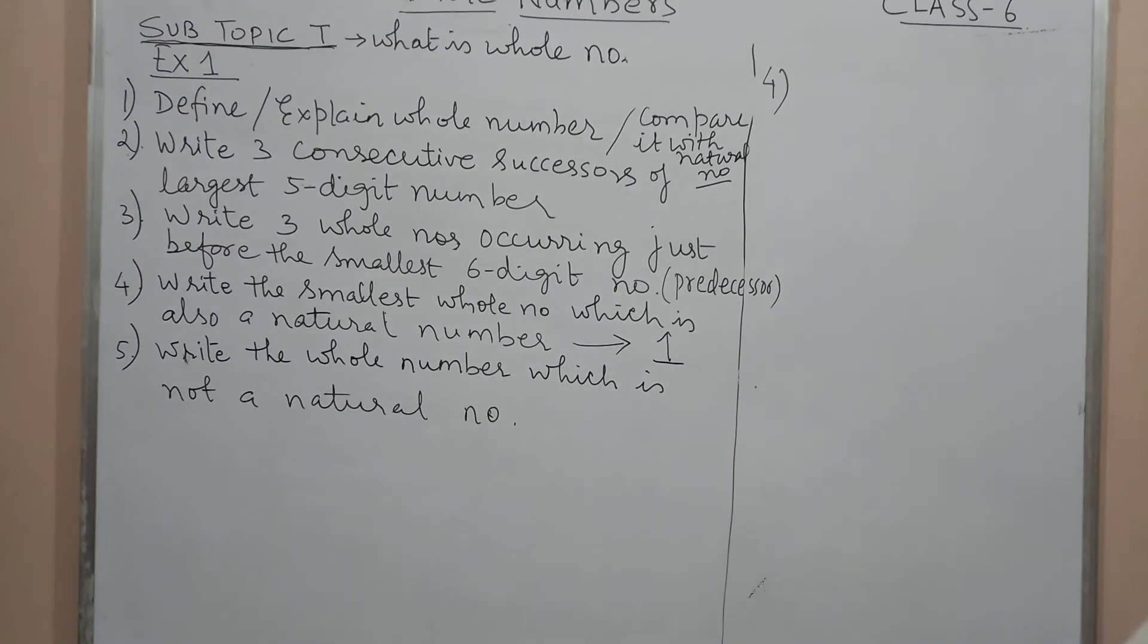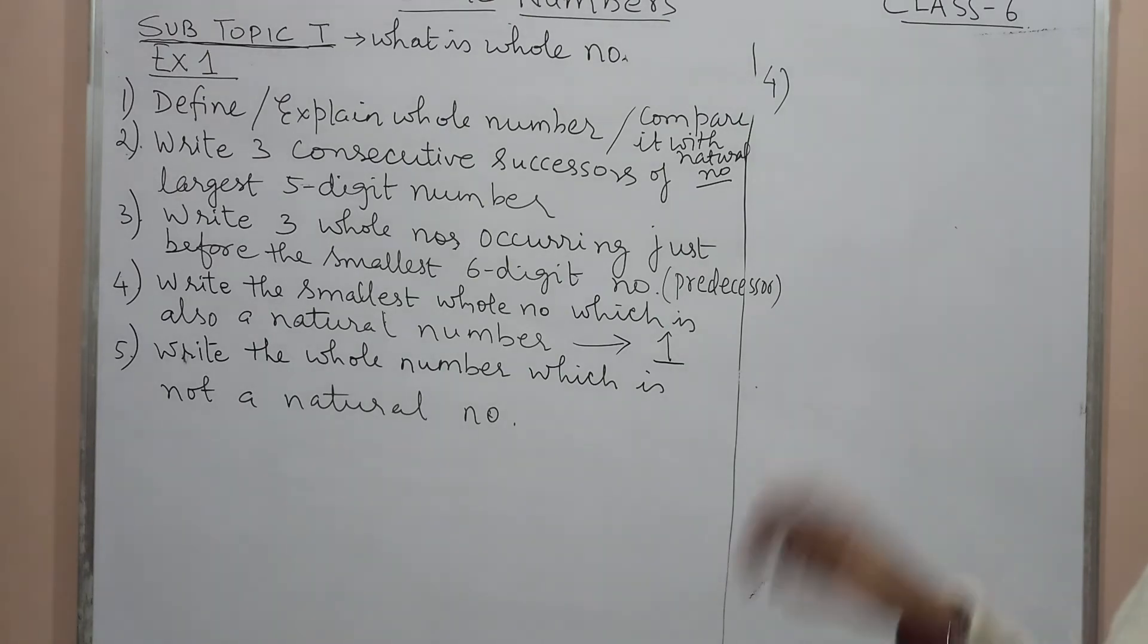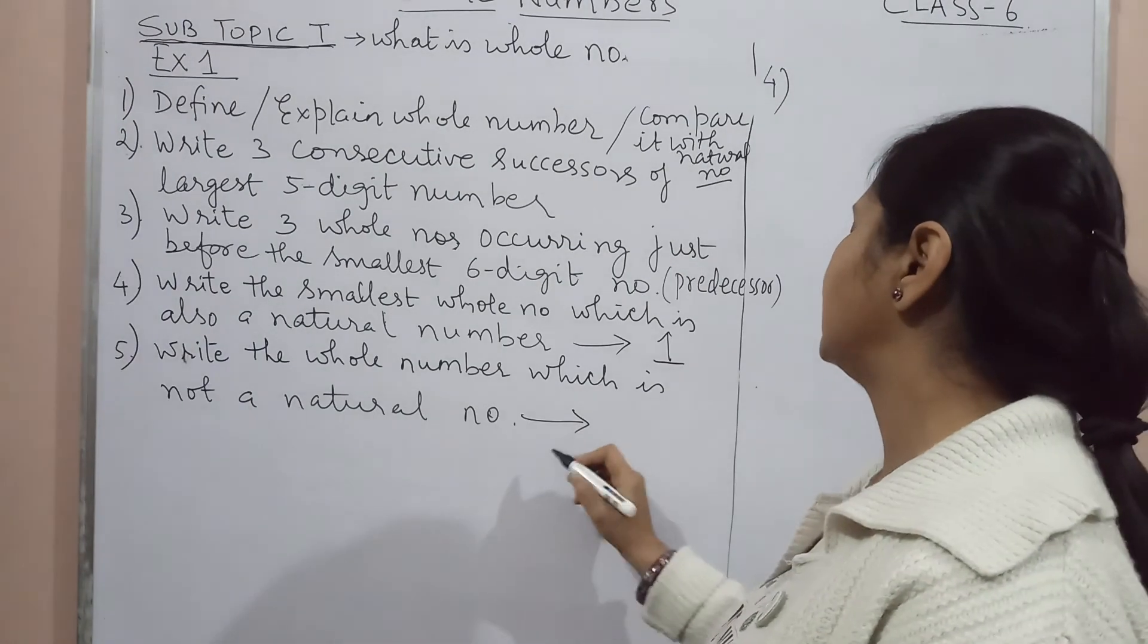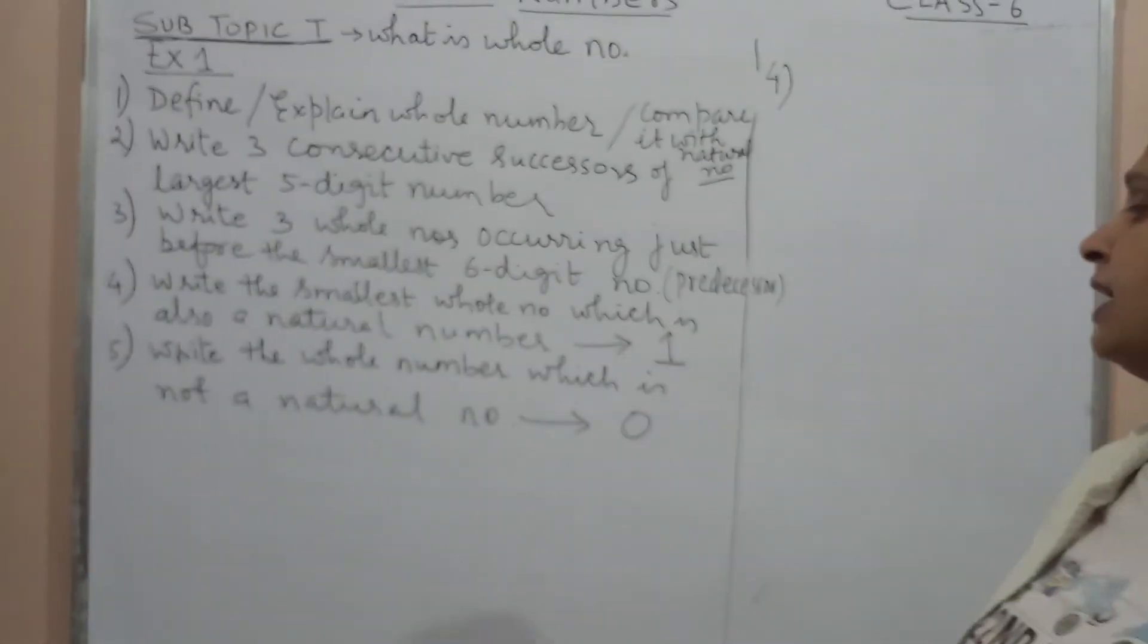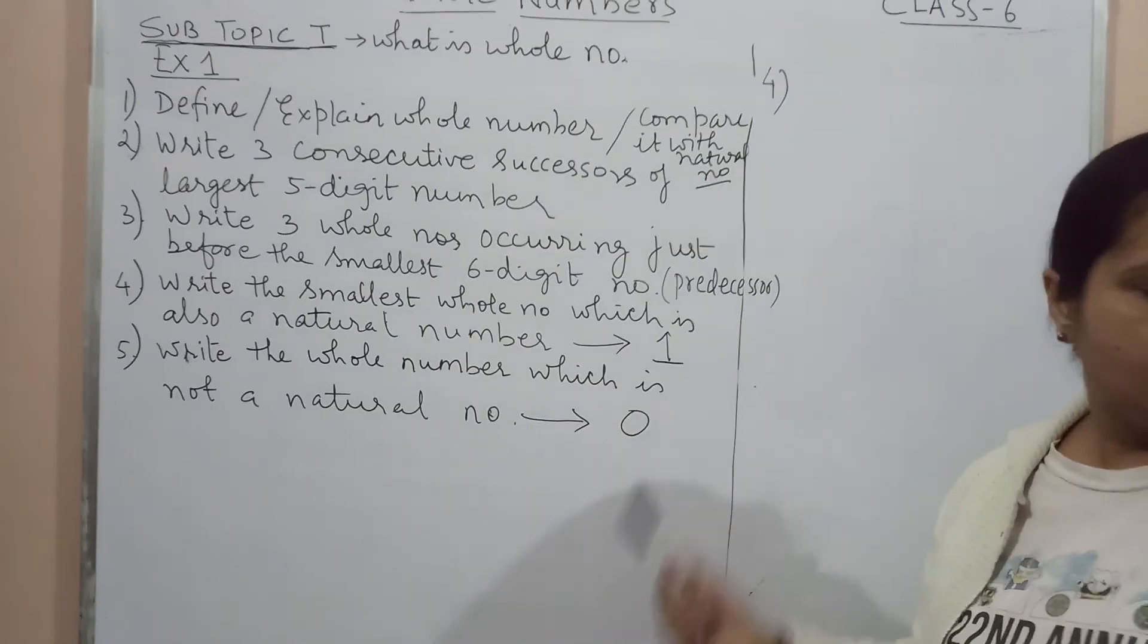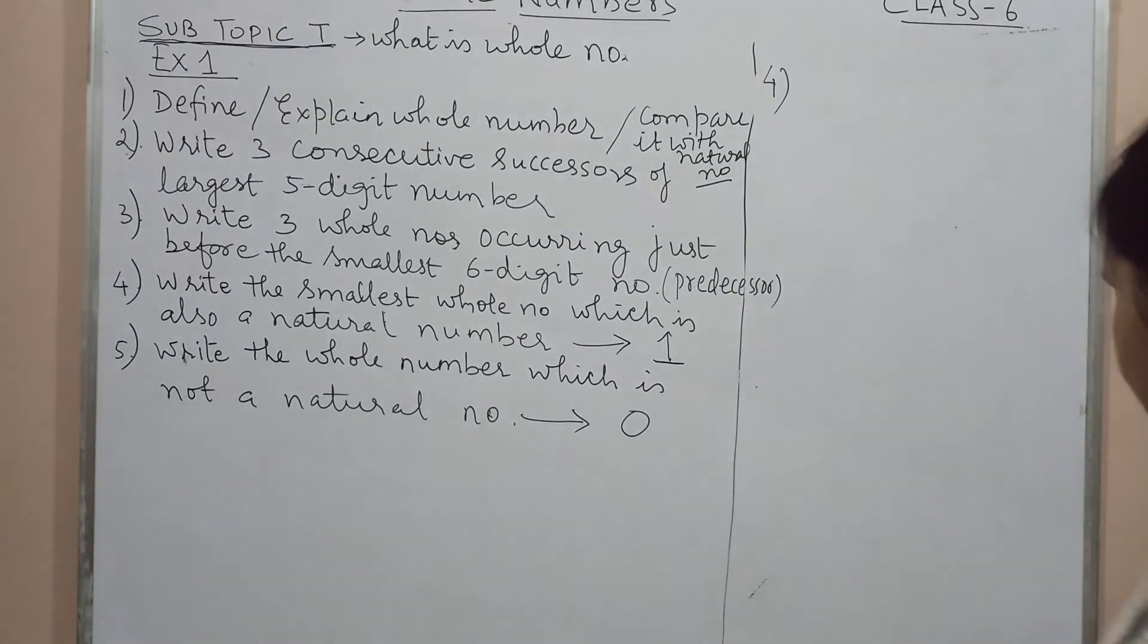Next question bole hai: write the whole number which is not a natural number. Sirf ek hi toh aisa number hai, jo ki natural number ke list mein nahi aata hai, but it is a whole number and that is 0. So this exercise is over. We will go for the next exercise. Thank you.